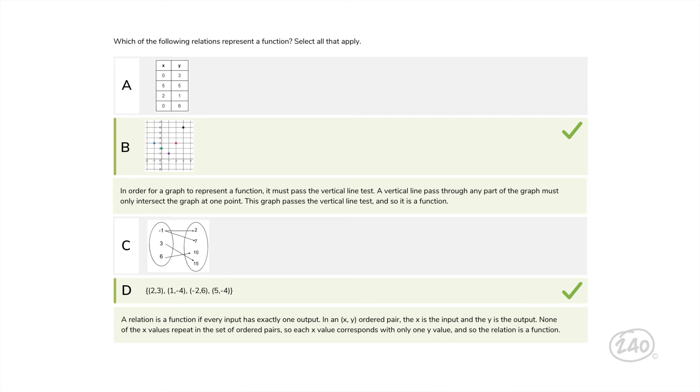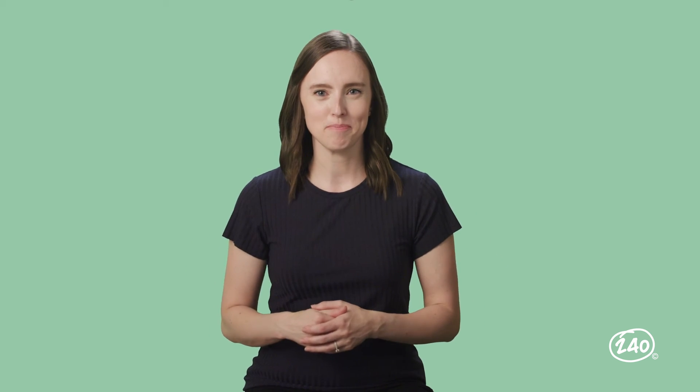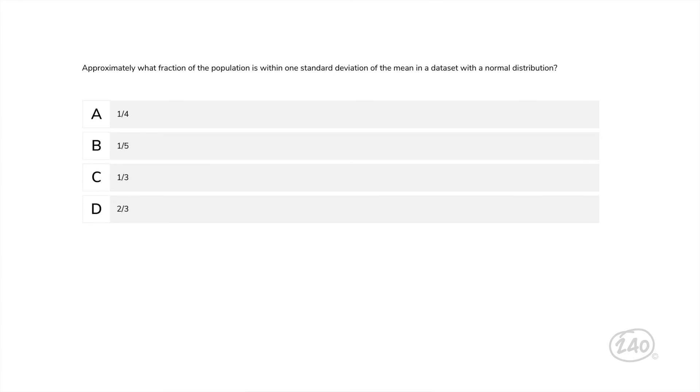And last stop in Category 1, calculus. Approximately what fraction of the population is within one standard deviation of the mean in a data set with a normal distribution? 68.2% of the population will be within one standard deviation of the mean. The closest benchmark fraction to this percentage is 2 thirds. So D is the best choice. Category 1, done. Let's move into Category 2, starting with geometry.